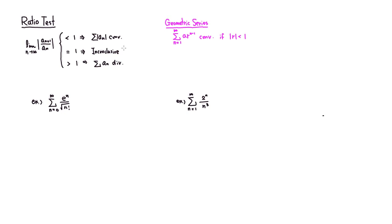So we have this first one: summation, n goes from 0 to infinity, of e^n over the square root of n factorial. So this is going to be our a_n. Let's find the limit as n approaches infinity of the absolute value of a_{n+1} over a_n.